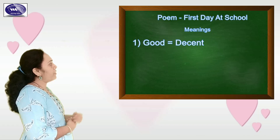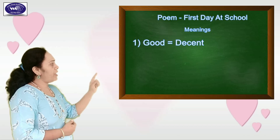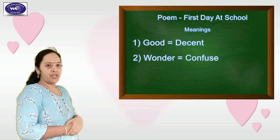Question number 1, meaning. First one is: good — the same. Every time we should pronounce the spelling also. So how should we read? G-double-O-D, good. D-E-C-E-N-T. Good means the same.